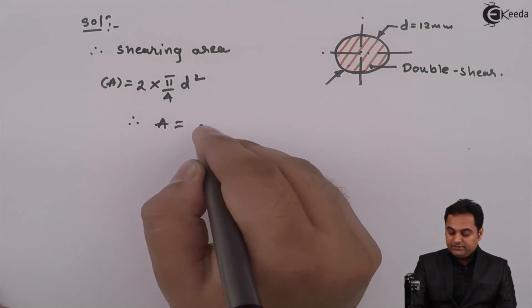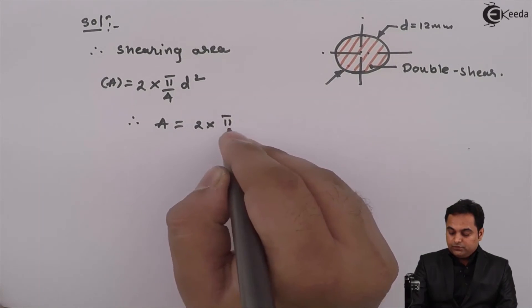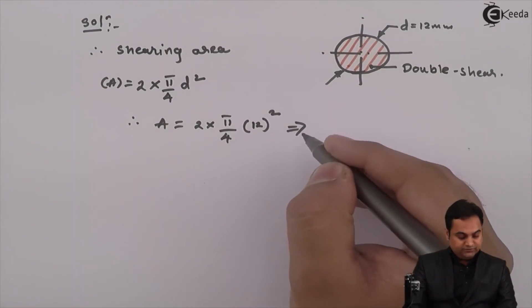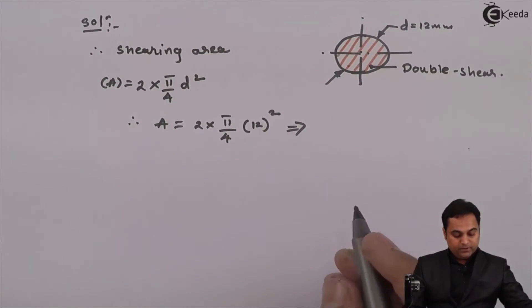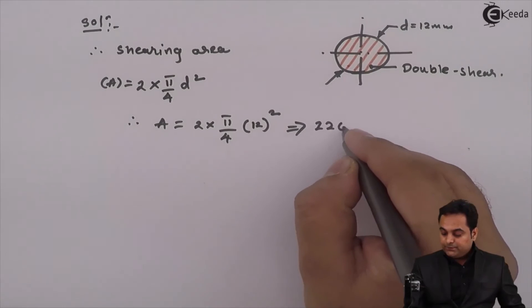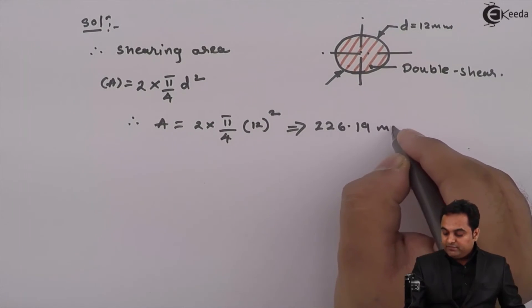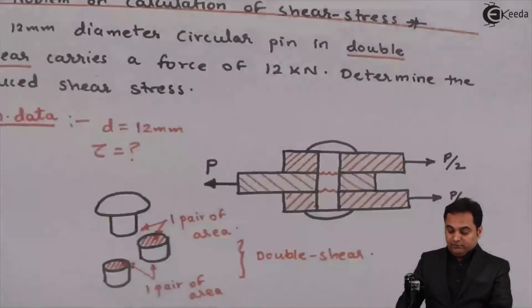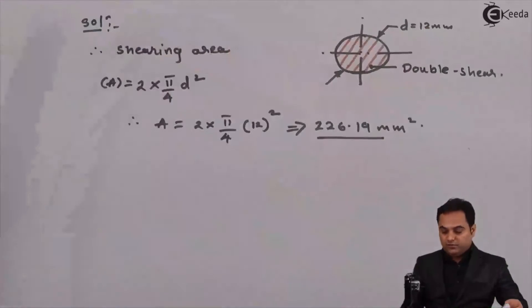So capital A is equal to 2 into pi by 4, diameter is 12 square. So this value comes out to be 226.19 mm square. Now after getting this shearing area, we have to go for the calculation of induced shear stress tau.